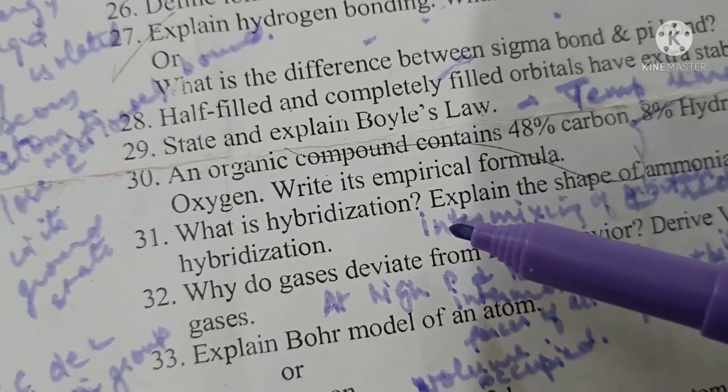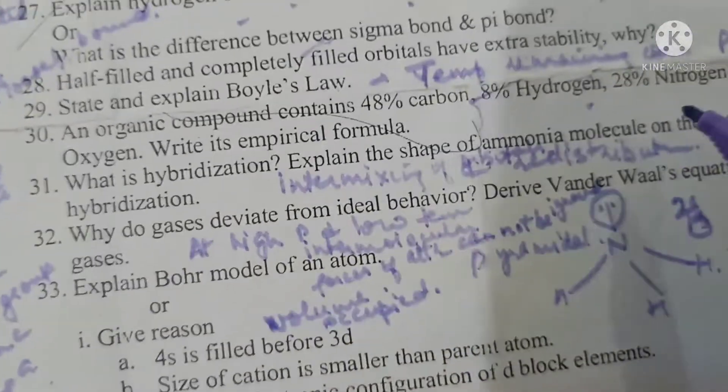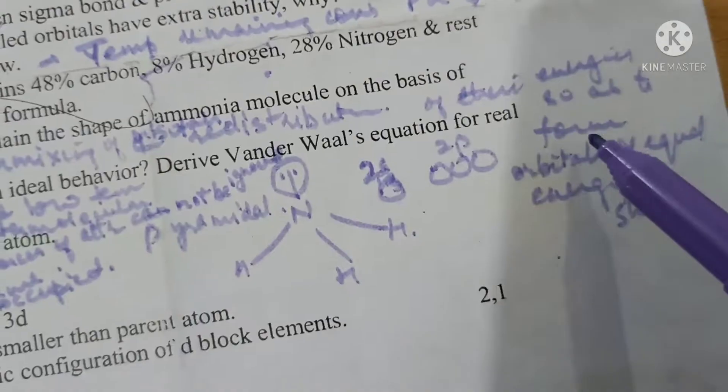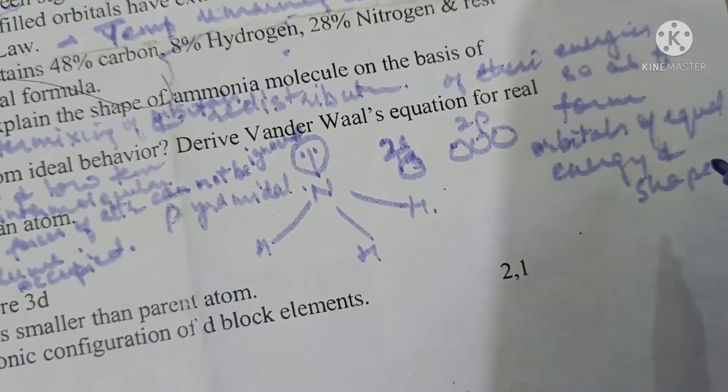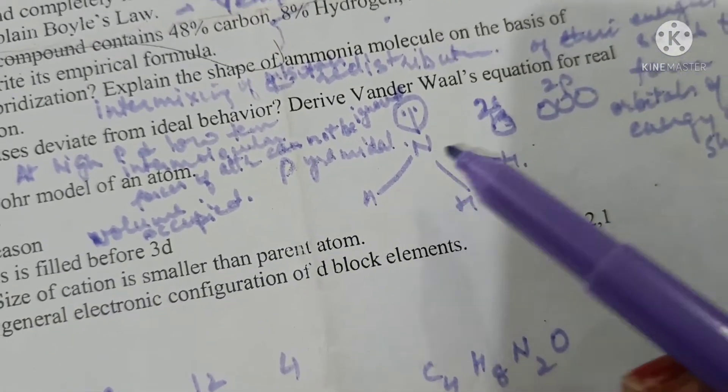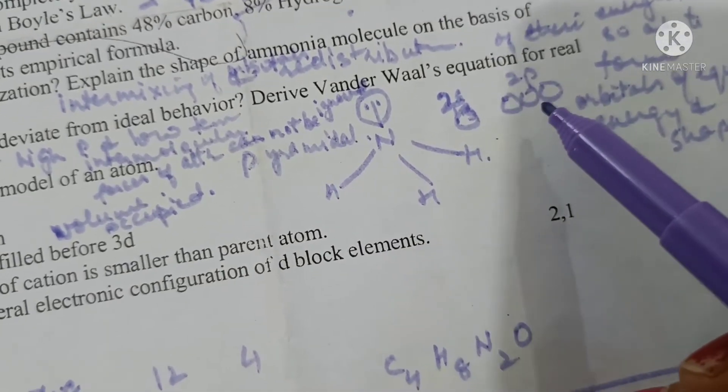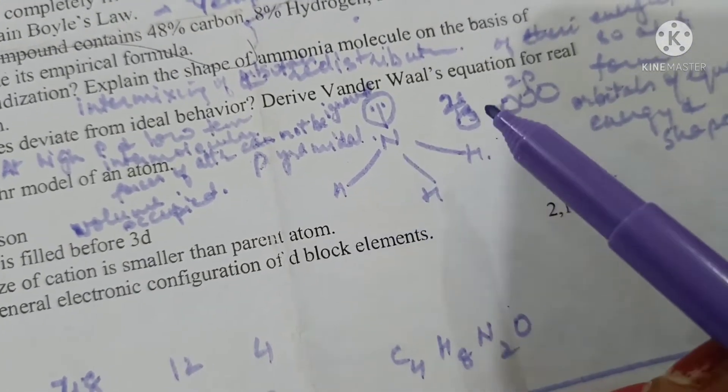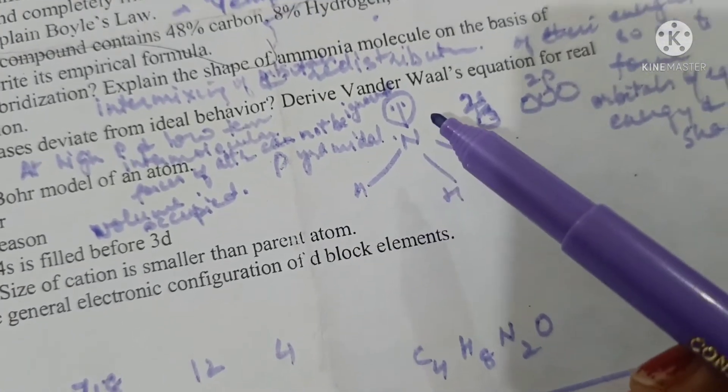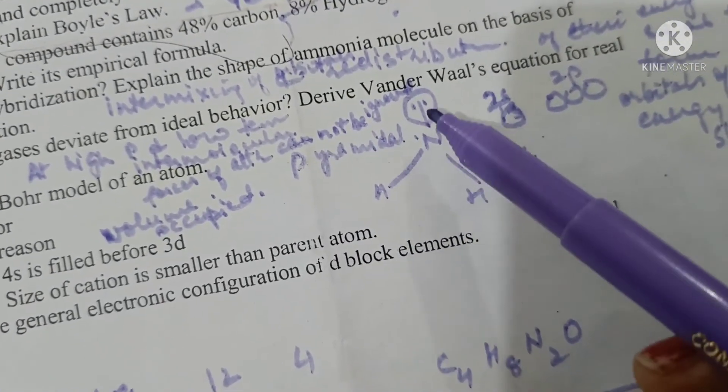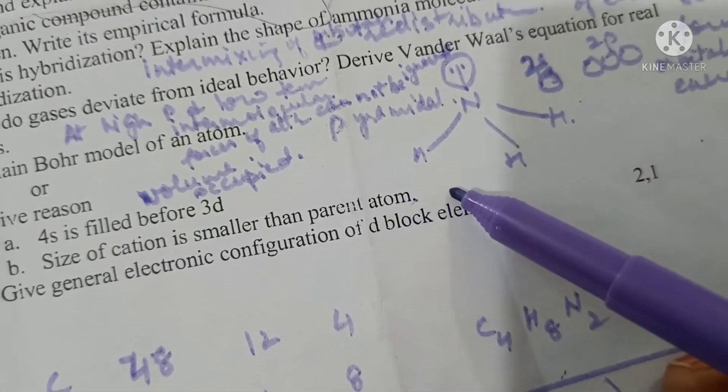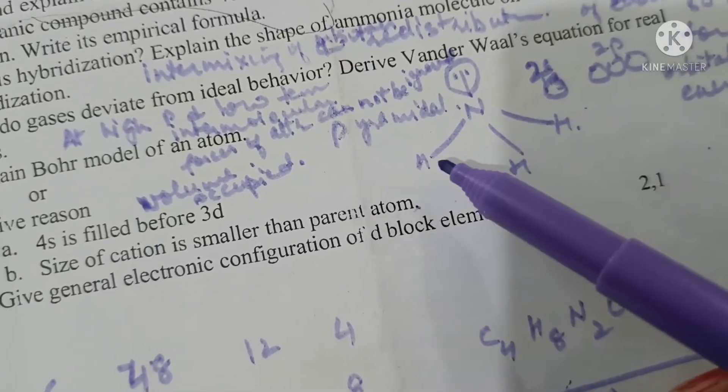What is hybridization? Intermixing of orbitals and redistribution of their energies to form orbitals equal in energy and shape is called hybridization. In case of ammonia, the 1 2s and 3 2p orbitals intermixed to form sp3 hybridization. After 4 sp3 hybrid orbitals formed, one is occupied by lone pair of electrons, other 3 by shared pair of electrons between nitrogen and hydrogen. As a result, the shape is pyramidal.